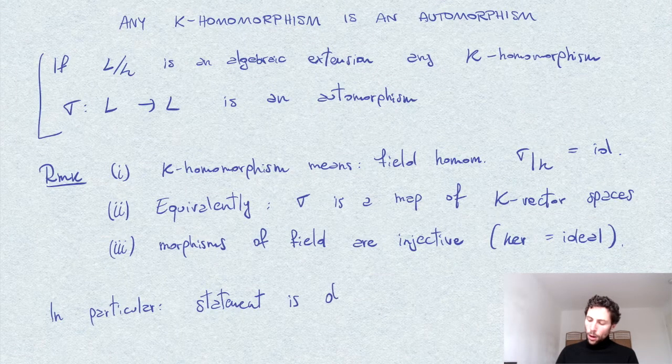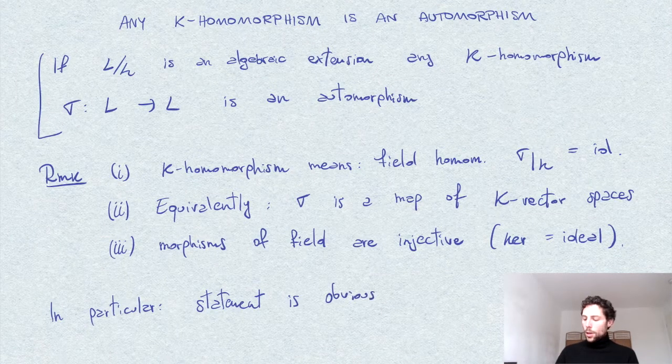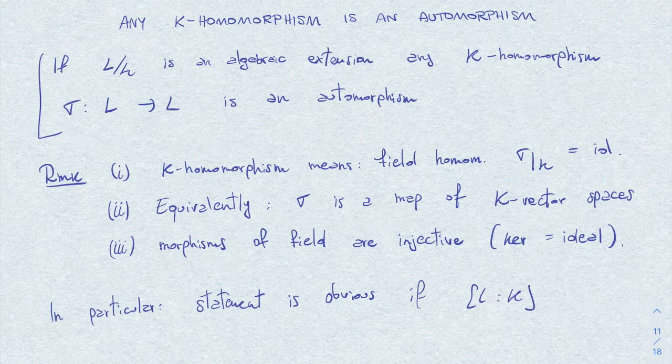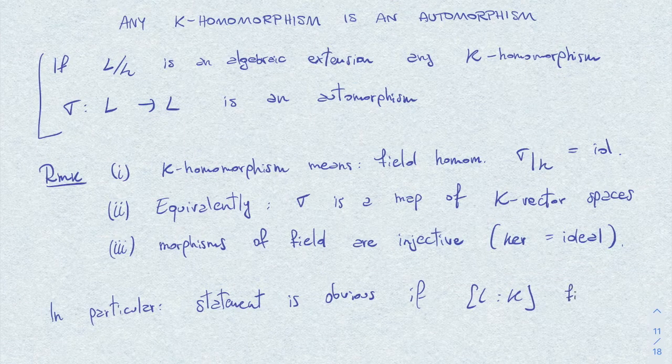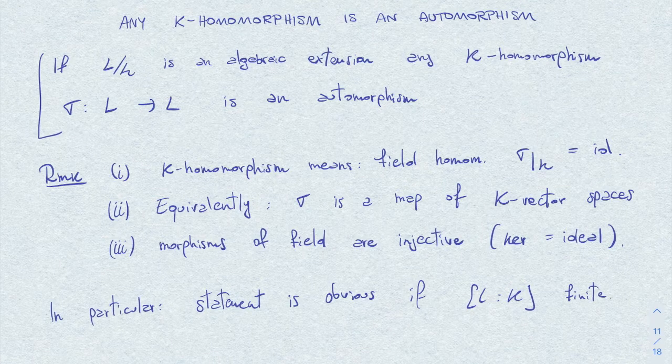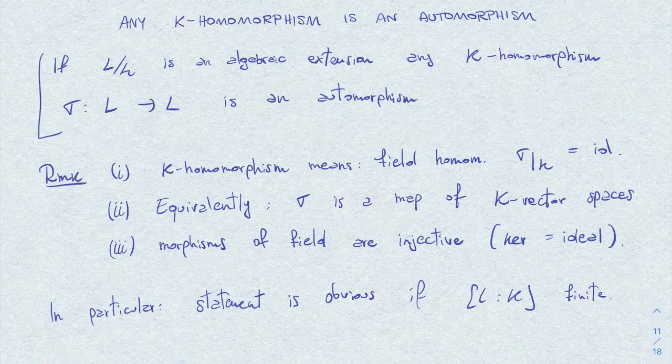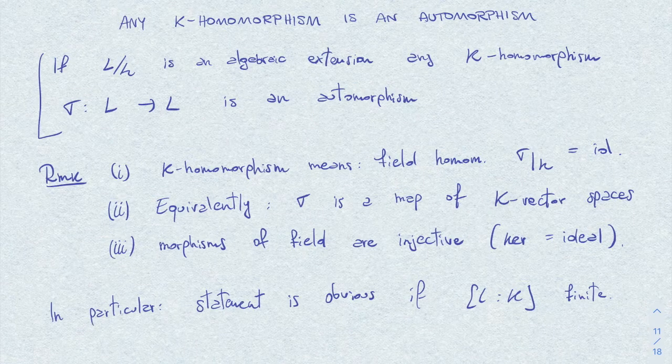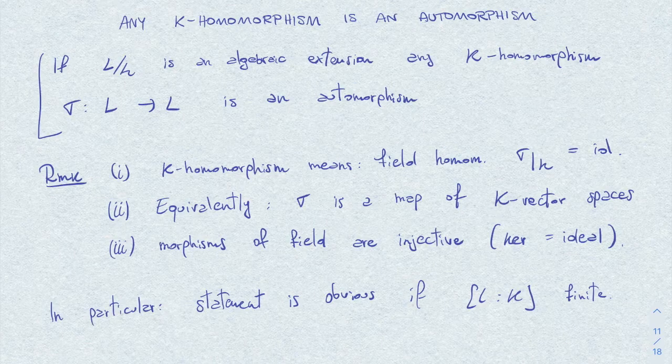The statement is obvious if L over k is finite degree, but of course our assumption is only that L over k is an algebraic extension. It could be of infinite degree. So here is one way we can use the fact that L over k is algebraic to show that this map sigma has to be surjective and therefore an automorphism.